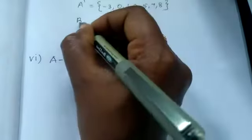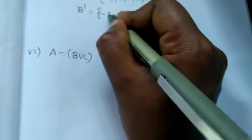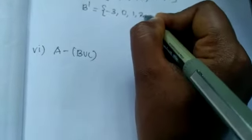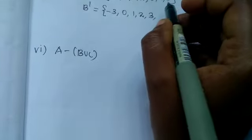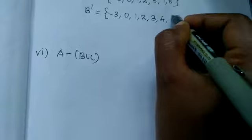Next we want to find out B dash, the elements which are not in B. The same: minus 3, 0, 1, 2, 3, 4, 6.